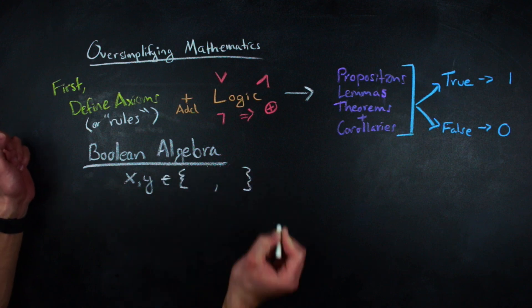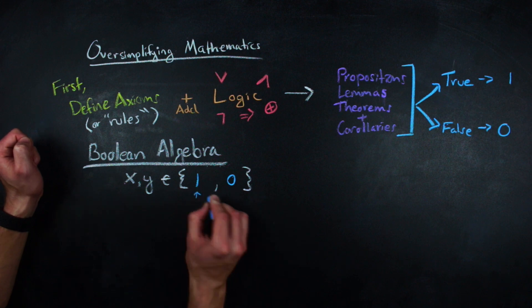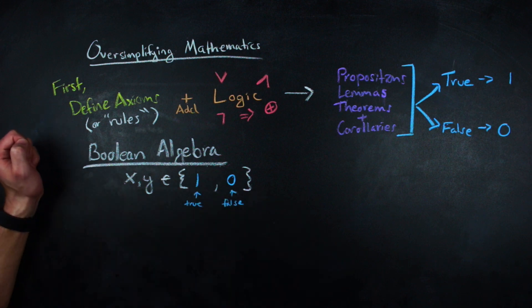So how does Boolean algebra work? To start off, Boolean algebra is algebra where the values are always true, one, or false, zero.